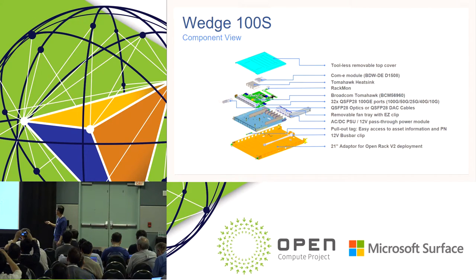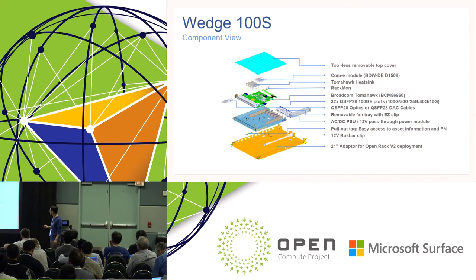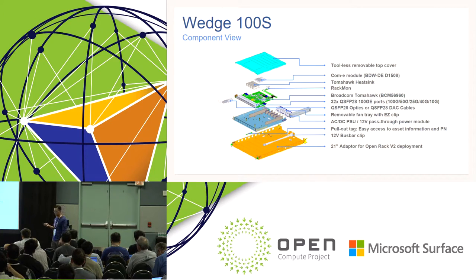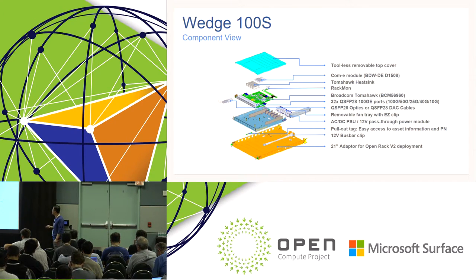This is a nice exploded view of Wedge 100S. At the bottom is the 21-inch adapter for open rack. There are two PCBs inside the box: one switch mainboard and one rack mount and fan control board. All major components are on the main switchboard. The big heat sink of Tomahawk is easy to spot. Early in our design cycle we worried about cooling Tomahawk, but it turns out it's equally challenging to cool the optics when all 32 ports are populated with 3.5-watt modules.